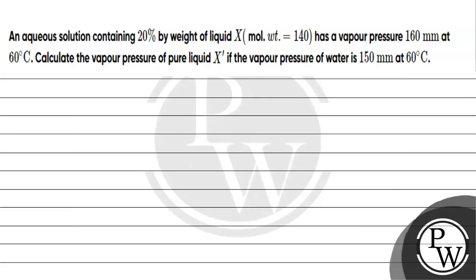Hello everyone, let's read this question. The question says: an aqueous solution containing 20% by weight of liquid X, with molecular weight 140, has a vapor pressure of 160 mm at 60 degree Celsius. Calculate the vapor pressure of pure liquid X, if the vapor pressure of water is 150 mm at 60 degree Celsius.